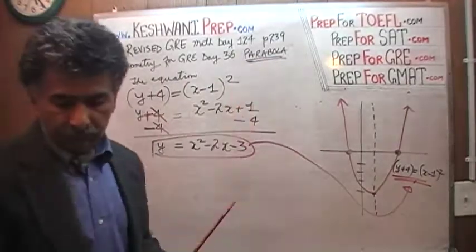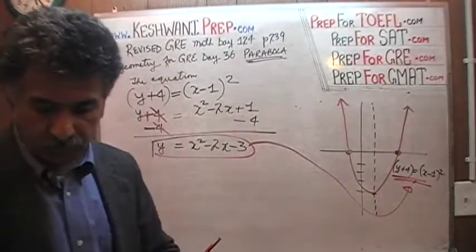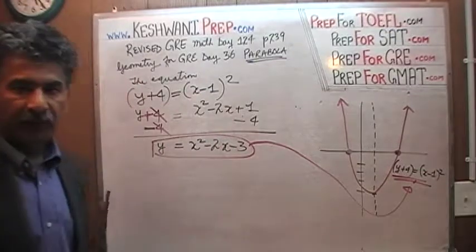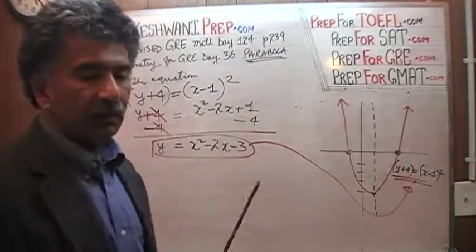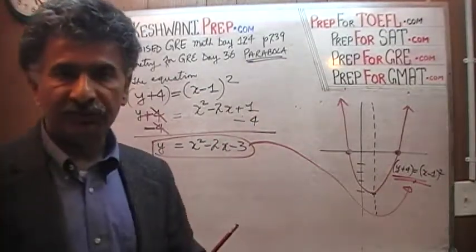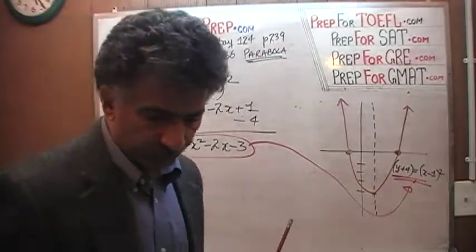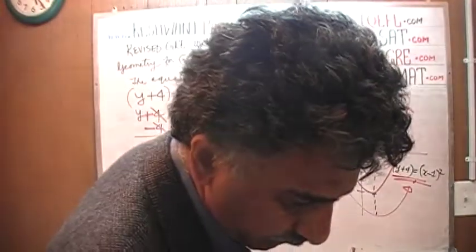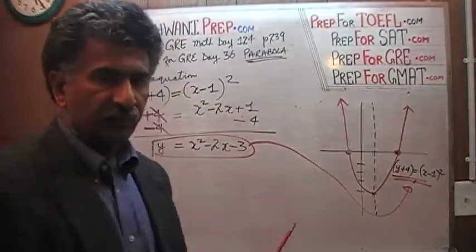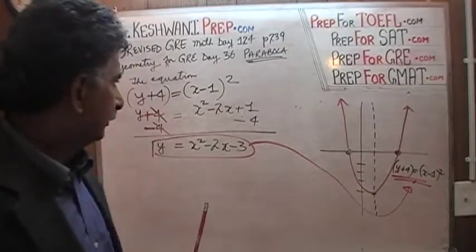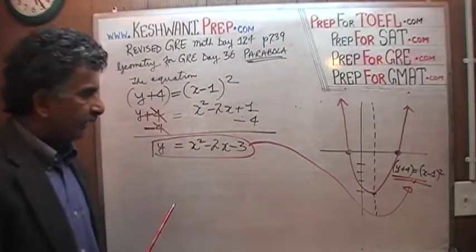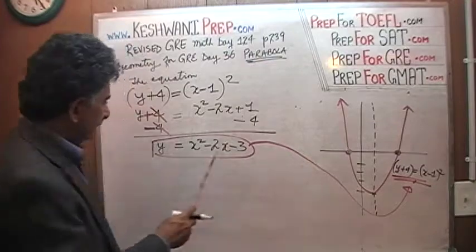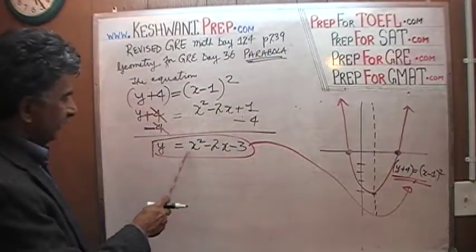This problem, problem number 2.8.5, deals with the notion of parabola, which is what we discussed yesterday. If you have not watched yesterday's video, it is important that you do so because this is a continuation of yesterday's video. Yesterday, what we found is that the equation of this particular parabola turned out to be this one.